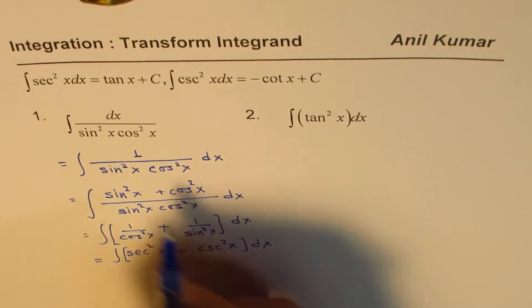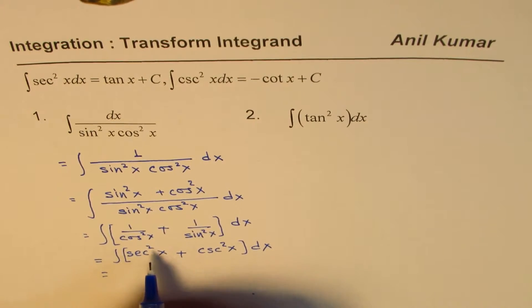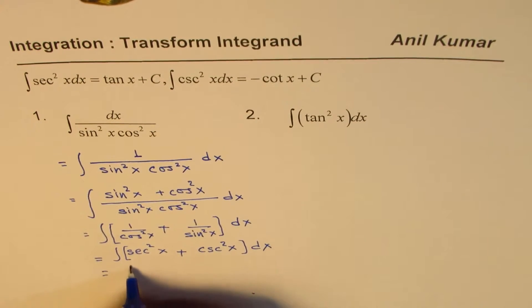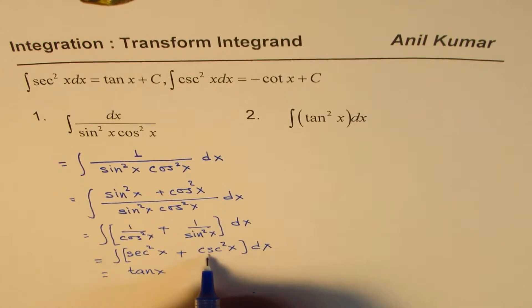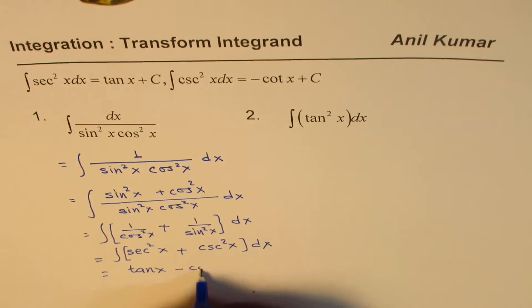And then we'll apply the given formula and the rules for integration. So the rule says you can add the integrals. So integral of secant square x is tan x. So we can write this as tan x. And integral of cosecant square x is minus cot x, so minus cot x.